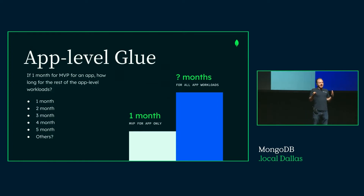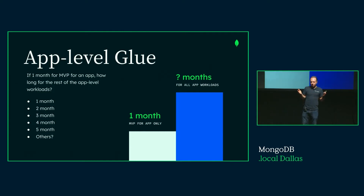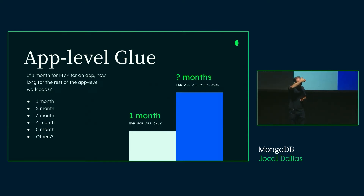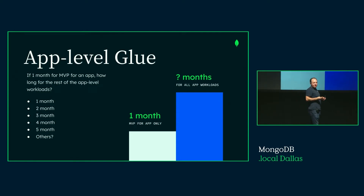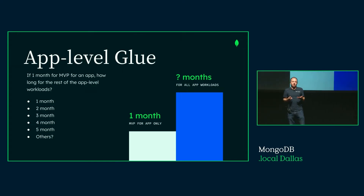I looked around the web to understand the impact of this but didn't find something conclusive, so I'm polling the audience. Imagine you spend one month building an MVP for an application. How many more months does it take to add mobile, search, business intelligence, KPIs, embedded charts, and analytics? Audience members said five months, and one said ten. The point is: even if it were three, but especially if it's five or ten, it makes a meaningful difference and really moves the needle if you can minimize spreading data across multiple products.